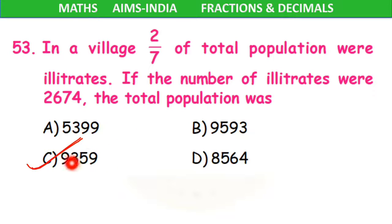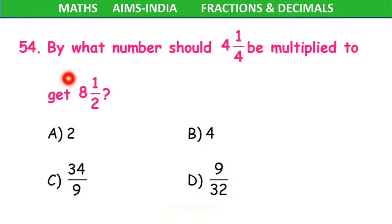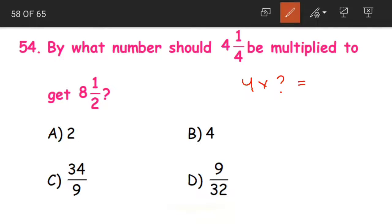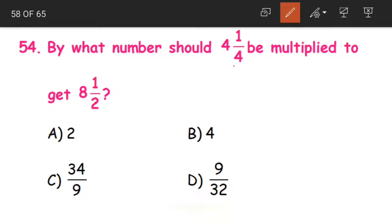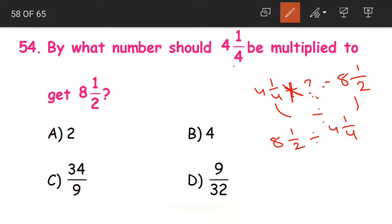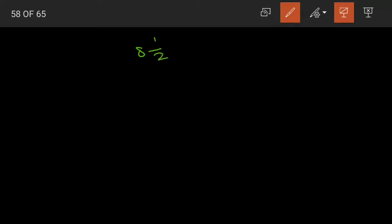Next question 54. By what number should 4 and 1/4 be multiplied to get 8 and 1/2? Think of it this way: by what number should 4 be multiplied to get 8? You divide 8 by 4 to get 2. Apply the same logic here: we need to divide 8 and 1/2 by 4 and 1/4. Converting to improper fractions: 8 and 1/2 gives 2 eights are 16 plus 1, that is 17/2. And 4 and 1/4 gives 4 fours are 16 plus 1, that is 17/4.